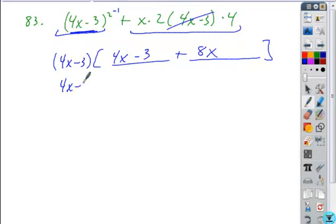And so all I need to do here to finish this up is to combine my terms. 4x and 8x is 12x minus 3.